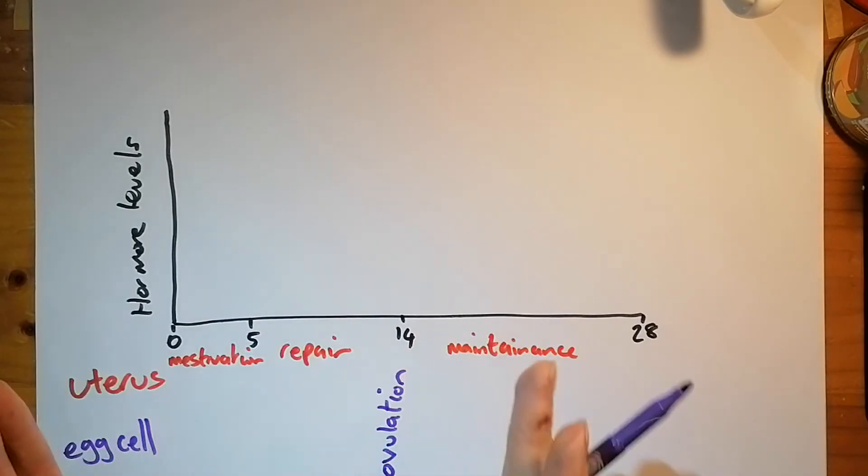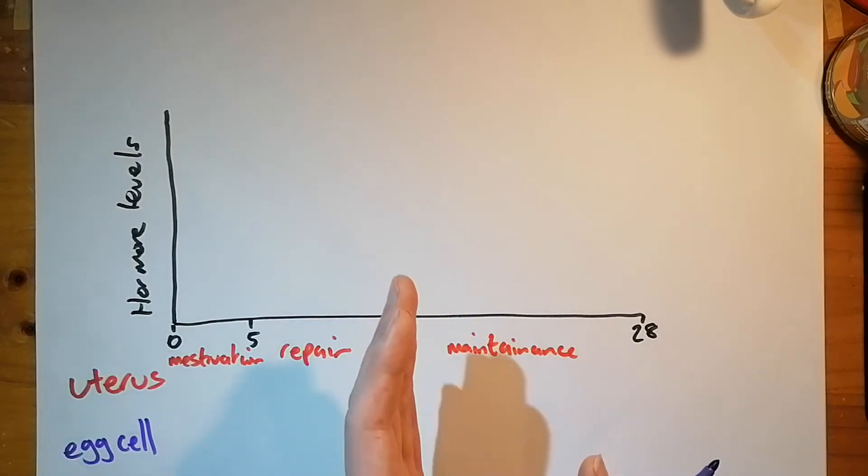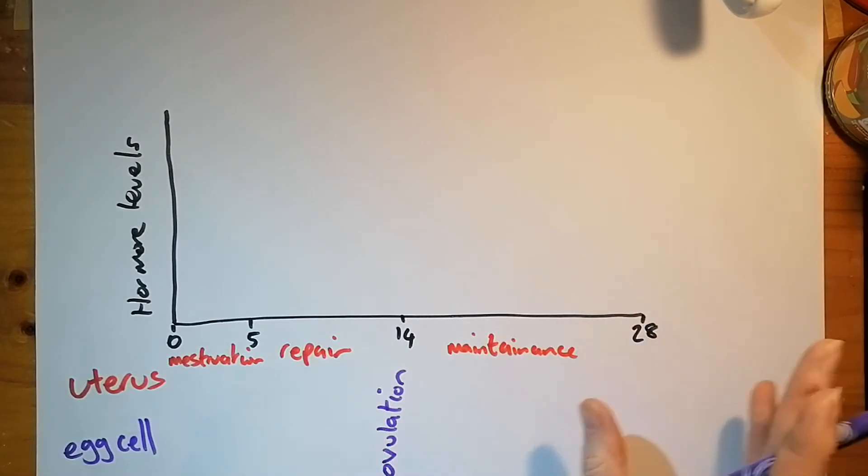And to be fair, research suggests that the days between 0 and 14 are fairly constant among females. But the days between 0 and 28 or 21 and 35, that shows greater variation. So you've got ovulation that happens on day 14.